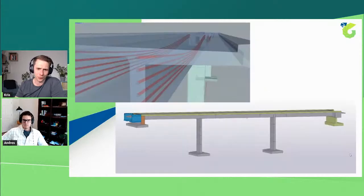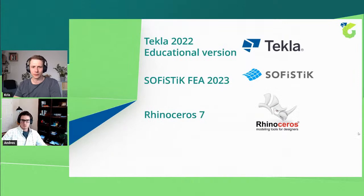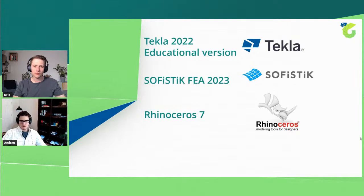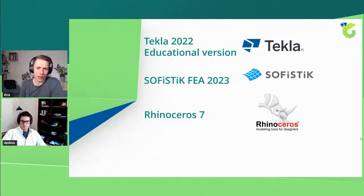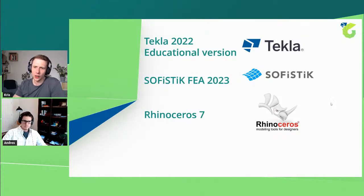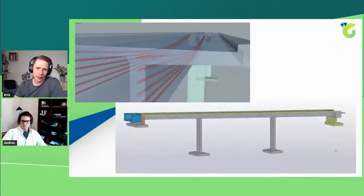The software we are going to use: I'm going to use Tecla 2022 educational version and also the Tecla educational version of the live link. If you register your email in the Trimble account, you can easily download the Tecla version together with the live link completely for free. Andreas is going to use Sophistic 2023 free. And of course we are going to use not the latest — since version 8 is latest — but the most stable version of Rhino, which is right now version 7. We are also using the Sophistic Rhino interface 2023.